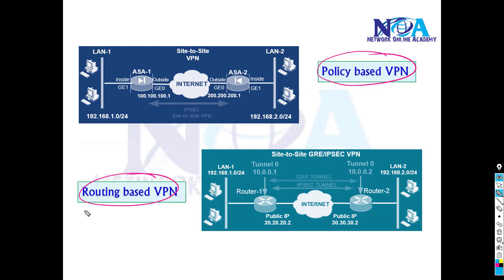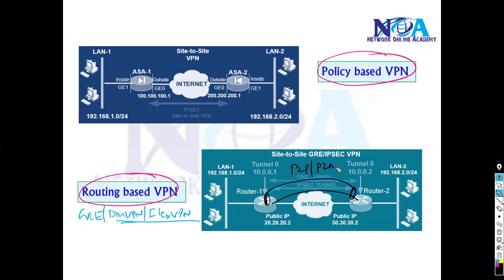There are some VPNs we have configured already, like GRE or DMVPN, or the FlexVPNs we will be covering in the later advanced sections. They are typically routing-based VPNs, because we will be setting up tunnel interfaces. These tunnels can be point-to-point or point-to-multipoint, as we discussed with DMVPN or FlexVPNs. All traffic goes through these tunnels, and we call these VPNs routing-based VPNs.